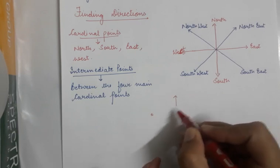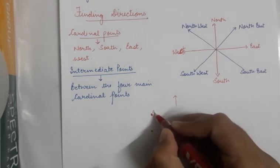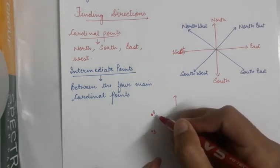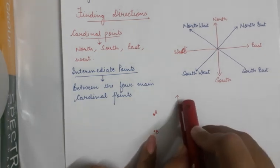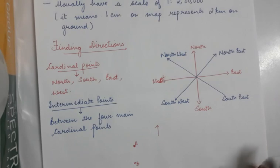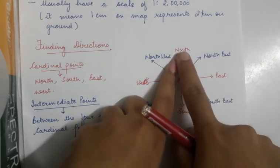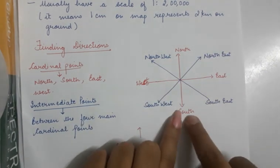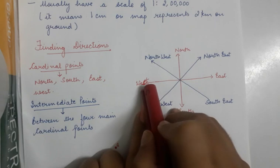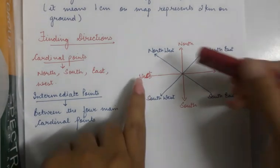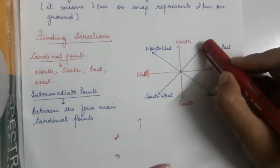For example, this point A is to the north of point B, and point D is to the south of point A. The north direction is mostly given to you on the map. It is very easy to find the intermediate directions. Between north and east is northeast. Between south and east is southeast. Between north and west is northwest. Between south and west is southwest.